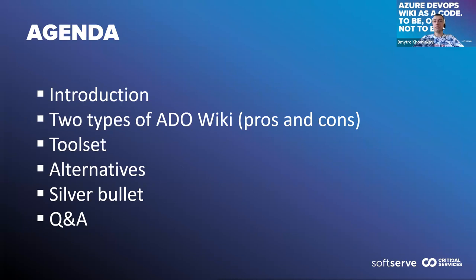According to the agenda, during this presentation we will discuss how to effectively use Azure DevOps Wiki for documentation in your project — what it's for and how to leverage it with best effort. We will discuss a tool set for that purpose and shortly compare some alternative solutions in the market. I will also share some ideas to speed up the implementation of that wiki solution.